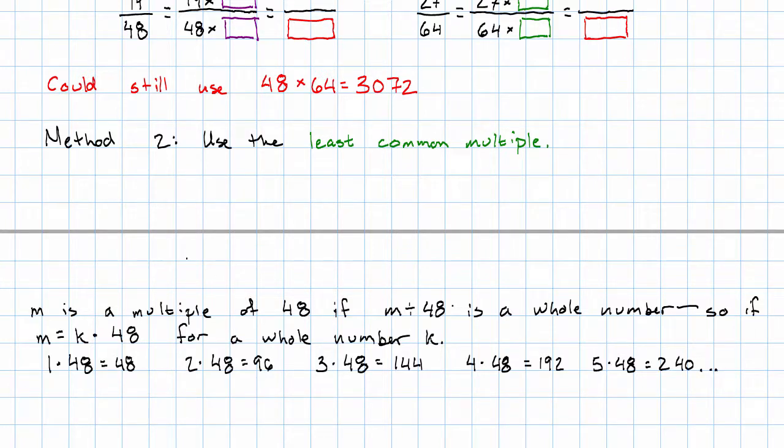The multiples of 64 are 1 times 64 is 64, 2 times 64 is 128, 3 times 64 is 192. Oh, look at this. The number 192 shows up on both lists.